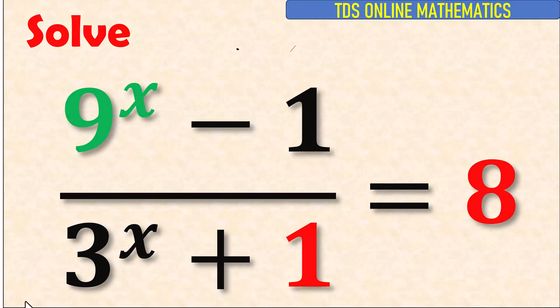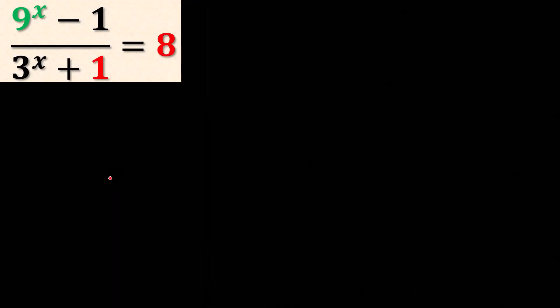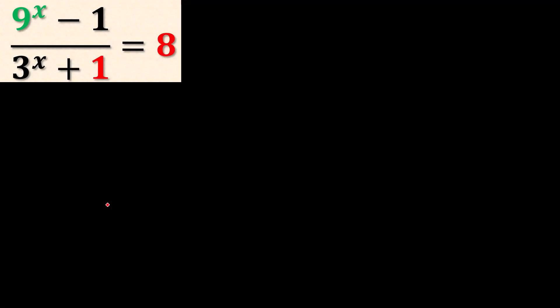Let's get started. Now, to start, let's observe something here. The numerator of the fraction, we have 9^x minus 1. Let's recall something here. In case you have a² minus 1, this one can be written as a² minus 1². This is difference of two squares: (a + 1)(a - 1).